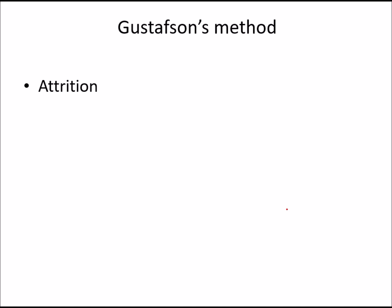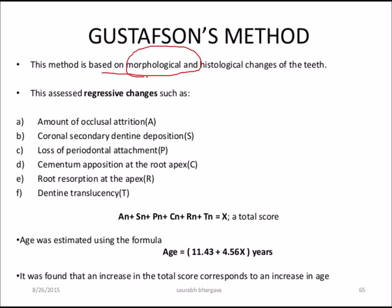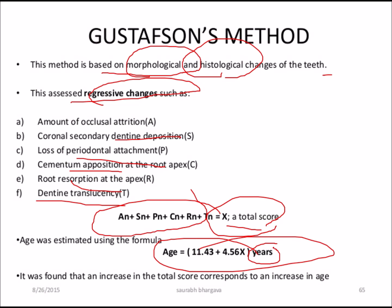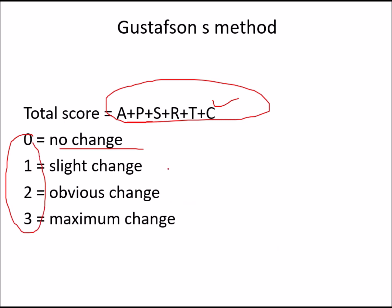Age estimation in the dead after 25 years can be done by Gustafson's method using six criteria: attrition, periodontosis, secondary dentine deposition, root resorption, transparency of root, and cementum apposition. This method is based on morphological and histological changes of teeth. Each criterion is scored 0 to 3 — 0 for no change, 1 for slight change, 2 for obvious change, and 3 for maximum change. The total score is used in a formula to estimate age in years.